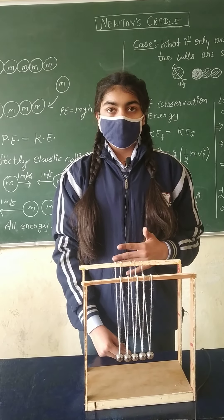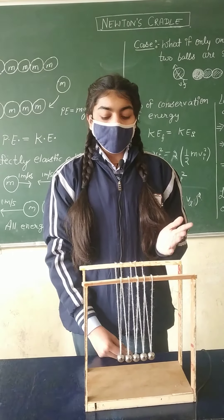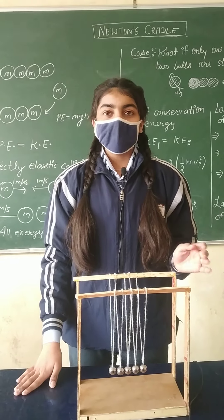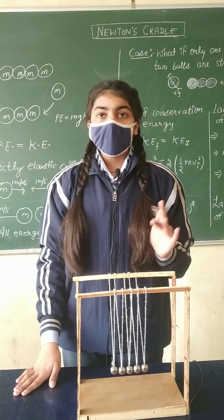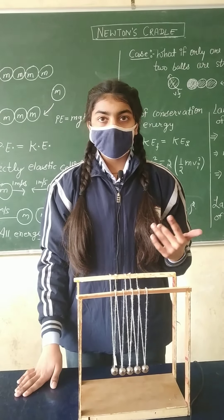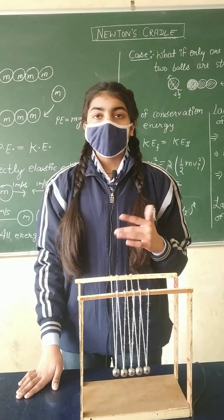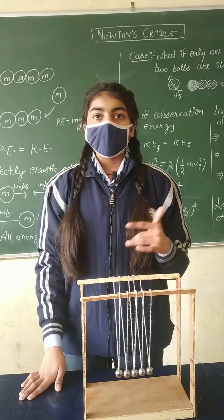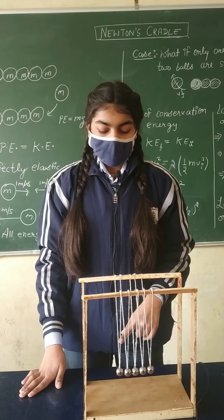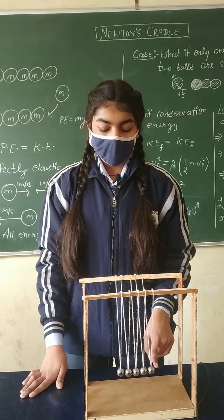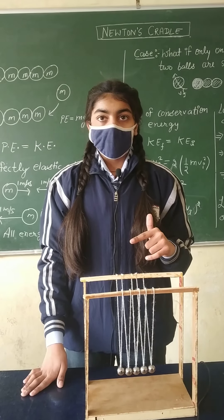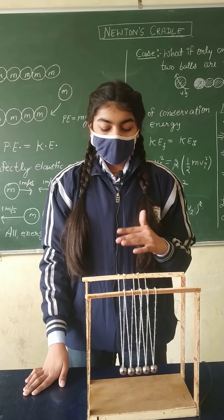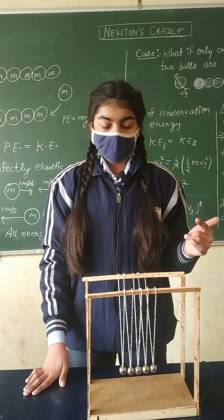Let's understand this with Newton's third law of motion. As soon as the first ball collides with the second ball, all momentum and energy get transferred to the second ball. The second ball then transfers all momentum and energy to the third ball, the third to the fourth, and finally all the momentum and energy get transferred to the fifth ball. So the fifth or last ball moves after the collision, as there is no ball beyond it to stop it.